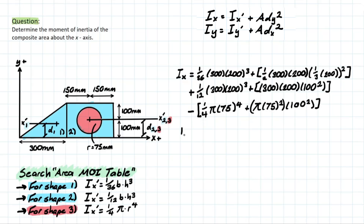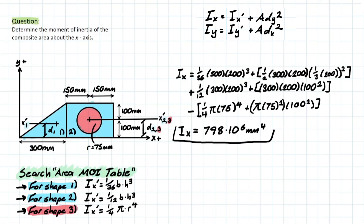For the final answer, this leaves us with a total moment of inertia for this composite shape of around 798 × 10⁶ mm⁴. You can work through this problem again and make sure that all of your units work out to mm⁴. That's pretty much the end of the problem — I hope this helped. We're going to dive a little bit deeper into moment of inertia in a later problem, but for now this covers the basic concepts. Thanks for watching.